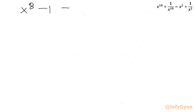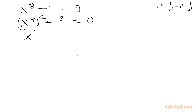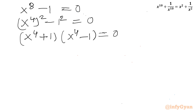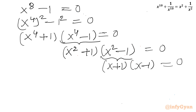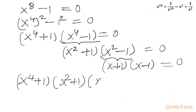So I will write x^8 - 1 = 0. I can write this as (x^4)^2 - 1^2 = 0. Now applying the difference of two squares formula: (x^4 + 1)(x^4 - 1) = 0. Again applying difference of two squares: (x^4 + 1)(x^2 + 1)(x^2 - 1) = 0. Expanding further: (x^4 + 1)(x^2 + 1)(x + 1)(x - 1) = 0.